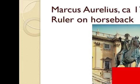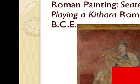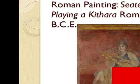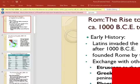Marcus Aurelius, ca. 173 CE — a bronze equestrian statue of the ruler on horseback. Roman aristocrat, late 1st century CE. Roman painted seated woman playing a kithara, ca. 40 to 30 BCE. Still life from Pompeii, before 79 CE.